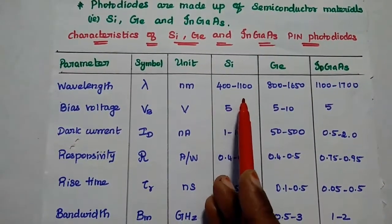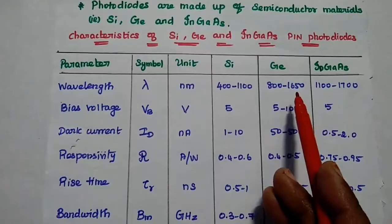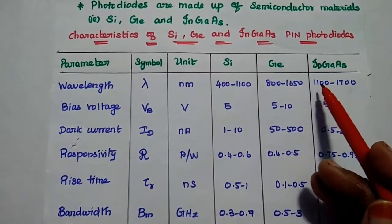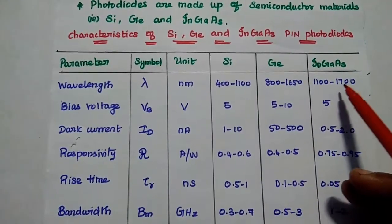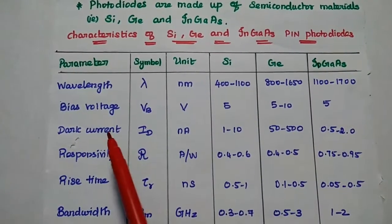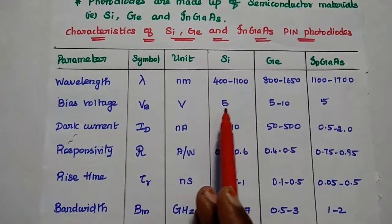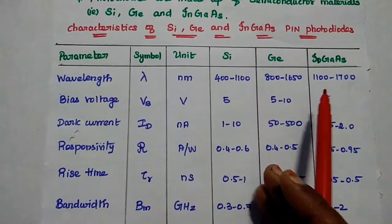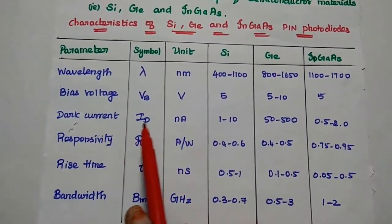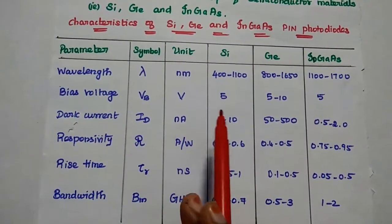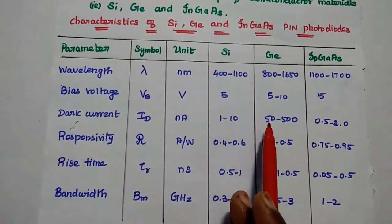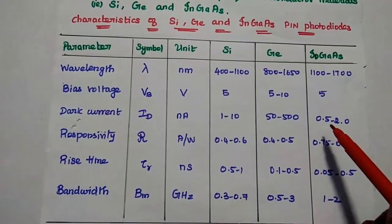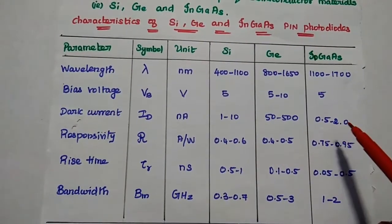For silicon, its value is 400 to 1100, for germanium 800 to 1650 nanometer. For indium gallium arsenide, its value is 1100 to 1700 nanometer. Similarly, the bias voltage is 5 volts for silicon, 5 to 10 volts for germanium, 5 volts for indium gallium arsenide. Here the dark current is in nanoamps, its value is 1 to 10, here it is 50 to 500, but for indium gallium arsenide, its value is very low, that is 0.5 to 2.